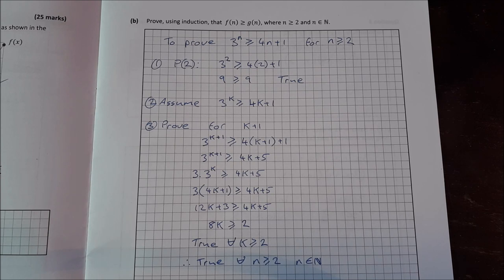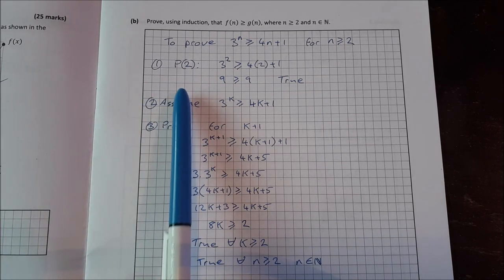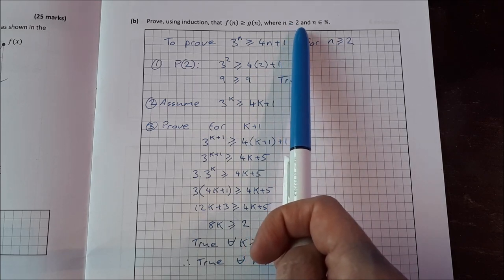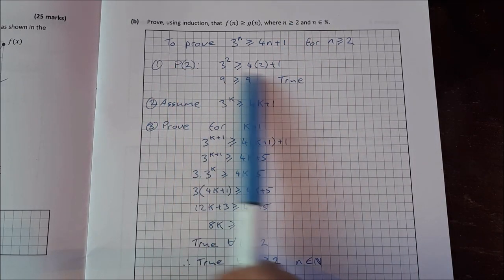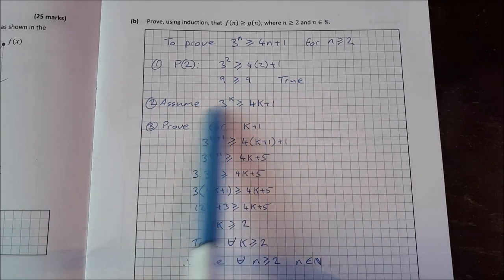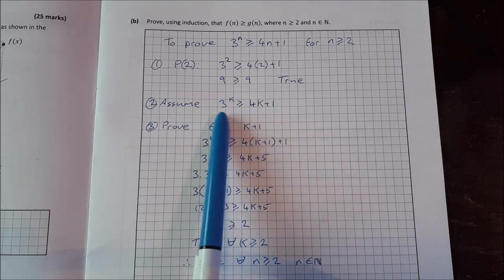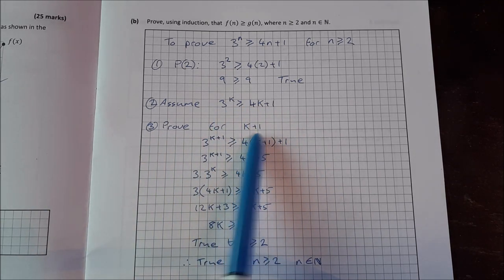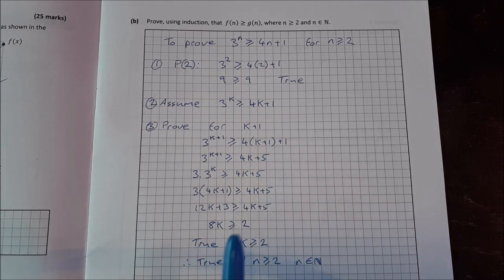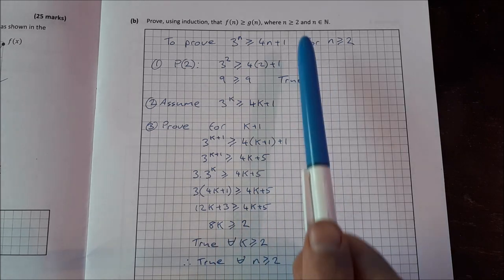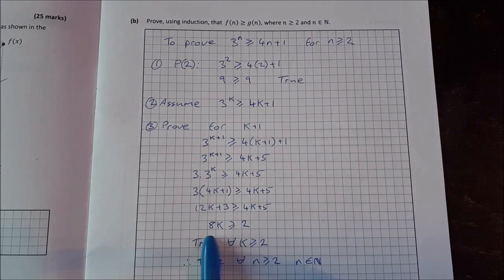Part B: Prove by induction that f(n) ≥ g(n) for n ≥ 2, n ∈ ℕ. Prove true for n = 2: 9 ≥ 9 ✓. Assume true for n = k. Then prove for k + 1, working through the algebra until you reach 8k ≥ 2, which is definitely true since k is always 2 or greater.